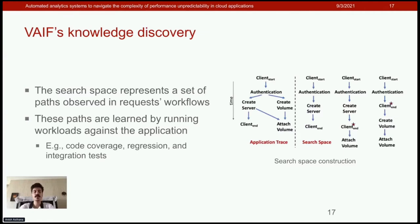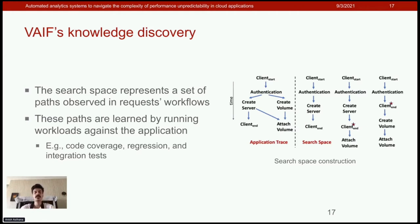To know what can be enabled on behalf of a group, VAIF has an offline profiling phase where it constructs the search space. VAIF represents the search space as a set of paths observed in a request workflow, stored as JSON files in our prototype. The nodes of these paths are trace point names and the edges are happens-before relationships, with hierarchical relationships represented by nested start and end annotations. These paths are learned by running workloads against the application, often during code coverage, regression, or integration tests.